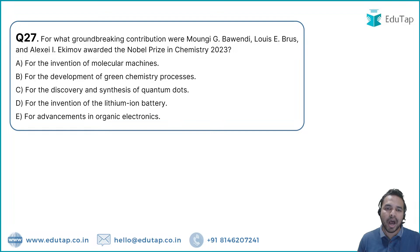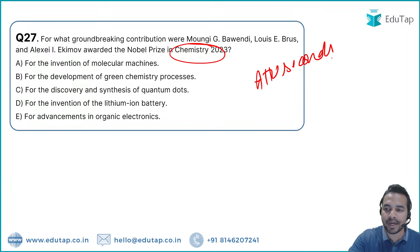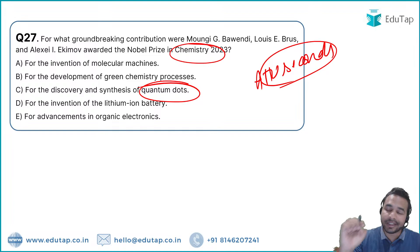Question 28: The Nobel Prize in Chemistry 2023 was awarded to Moungi Bawendi, Louis Brus, and Alexei Ekimov for the discovery and synthesis of quantum dots. Use the mnemonic MLA — Mongi, Louis, and Alexi. Option C is the right answer.